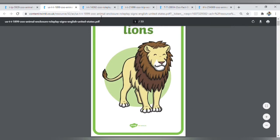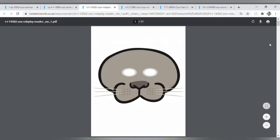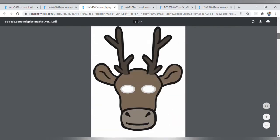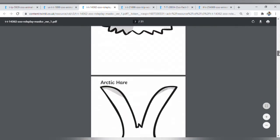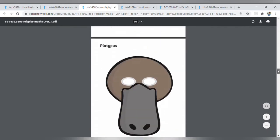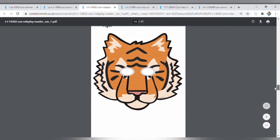We have animal masks, great for role play or performances and a great chance for children to think about the different features of animals, leading to thinking about animal groupings: mammals, reptiles, birds.